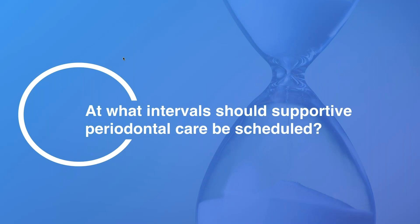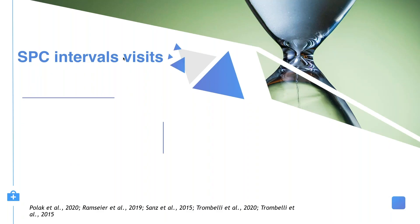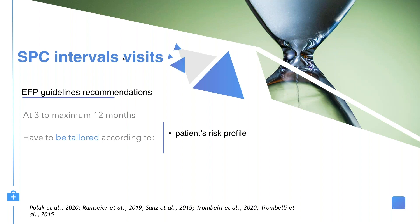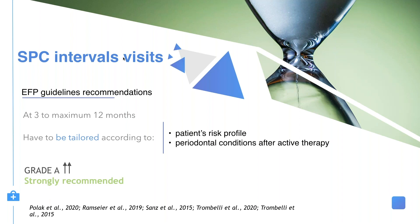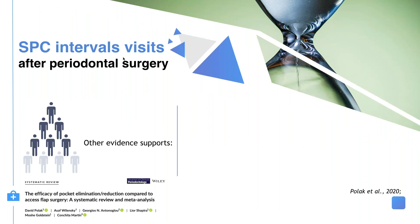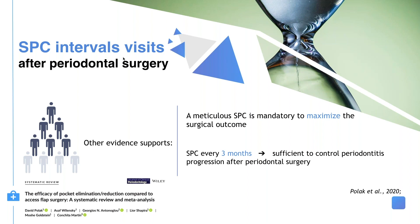Now knowing that supportive periodontal care is important, at what intervals should we schedule these visits? The EFP guidelines recommend visits at 3 to maximum 12 months, with intervals tailored according to the patient's risk profile and the periodontal conditions obtained after active periodontal therapy. This carries a Grade A recommendation — strongly recommended with unanimous consensus. Regarding periodontal surgery, evidence supports that a meticulous supportive periodontal care program is mandatory to maximize surgical outcomes.